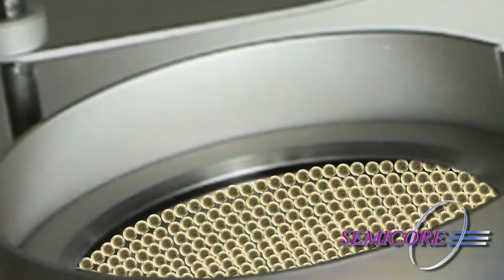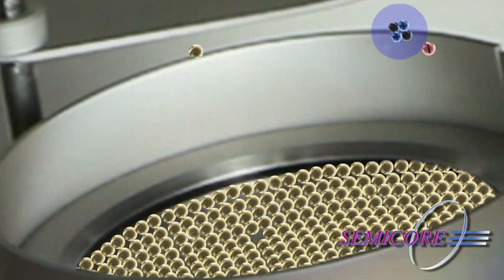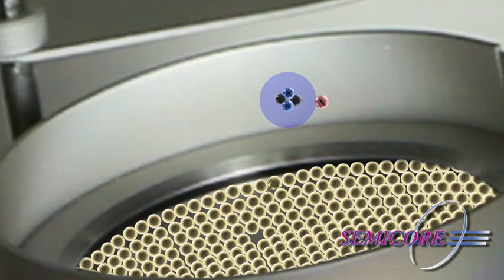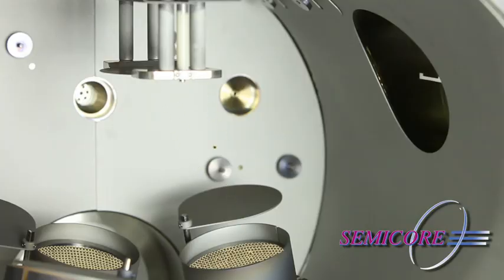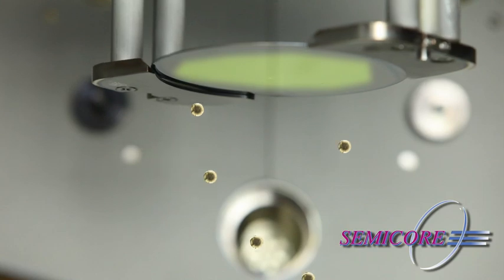The positively charged ion is accelerated towards the magnetron. This ion carries enough energy to knock off some of the magnetron's target material. This target material will then collect on surfaces in the path the magnetron is directed at. This is how material collects on your substrate.